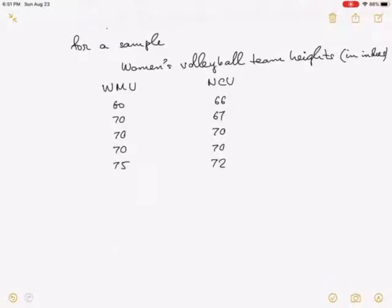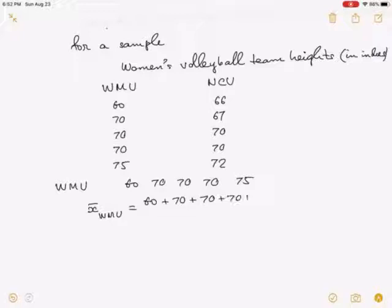For the Western Massachusetts University, if we put the data in increasing order, it is 60, 70, 70, 70, 75. So the mean x-bar for WMU is 60 plus 70 plus 70 plus 70 plus 75 divided by 5. So you can compute this is 69.